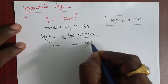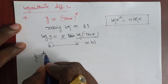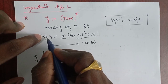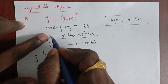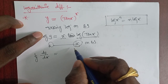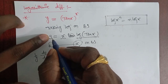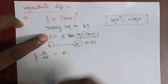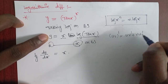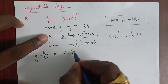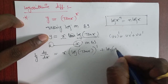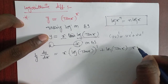Differentiating with respect to x on both sides: the left side gives (1/y)(dy/dx). On the right side we apply the product rule u·v' + v·u' to x·log(tan x): the derivative of log(tan x) multiplied by x, plus log(tan x) multiplied by the derivative of x.